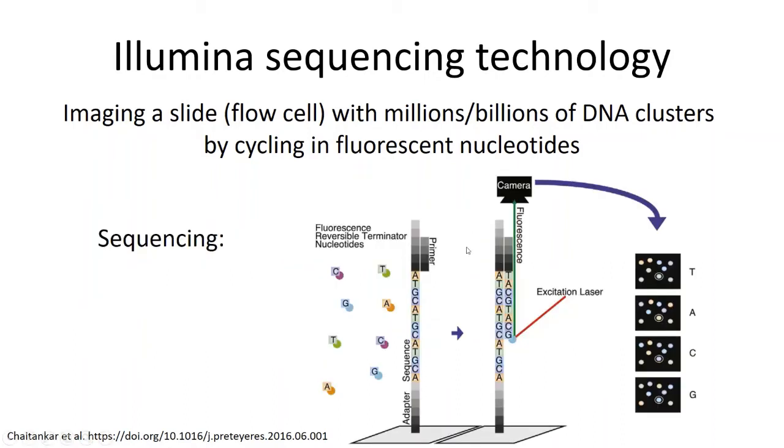After the flow cell is generated, then the actual sequencing chemistry takes place. A primer is annealed to the accessible adapter and then nucleotides are flowed in through the flow cell. There are fluorophores attached to these nucleotides.